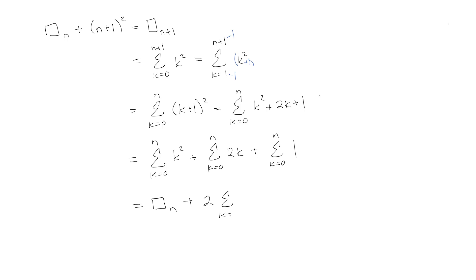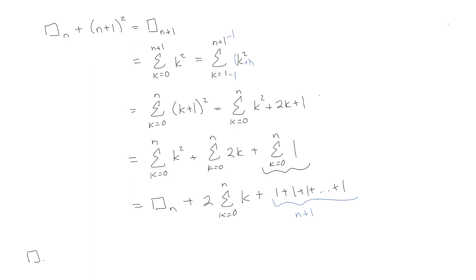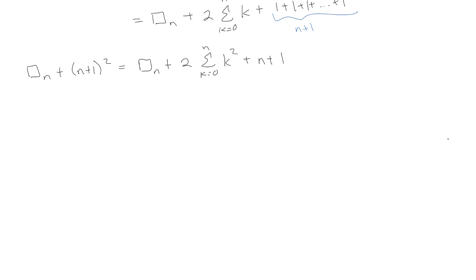This first sum I already know — it's square sub n. For the sum of 1s: we're adding 1 plus 1 plus 1... how many times? You might be tempted to say n, but we're actually adding n+1 terms, so that's just n+1. So pulling the 2 out of the middle sum, we have: square sub n plus (n+1)² equals square sub n plus 2 times the summation of k plus (n+1).